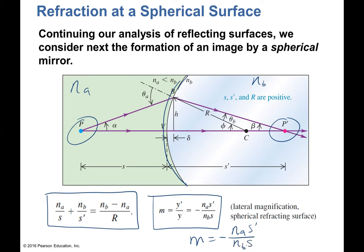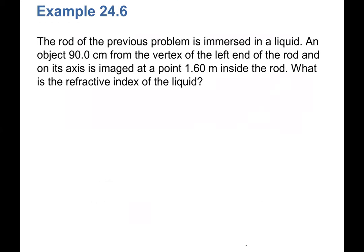Magnification equals negative index of refraction of A times S prime over index of refraction B times the object distance — a modified version. We can solve problems where an object is in one medium and the image is generated in another. Because the light refracts, you can have a real or virtual image depending on the circumstances.